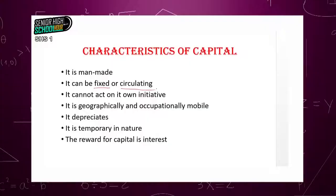Circulating capital is capital that changes its form in the course of production. An example is flour. Flour is used to make bread; flour is made from wheat. When you use flour to make bread, in the course of making the bread, the flour will transform into the bread. So that makes the flour a circulating capital.